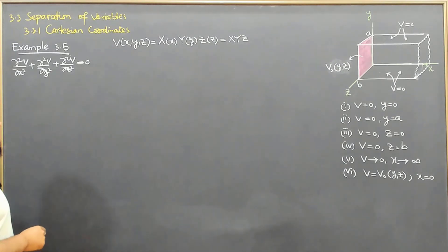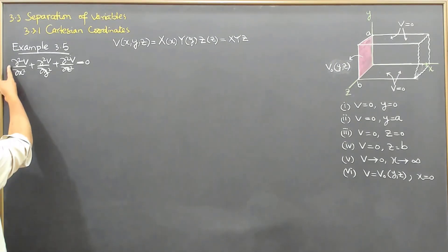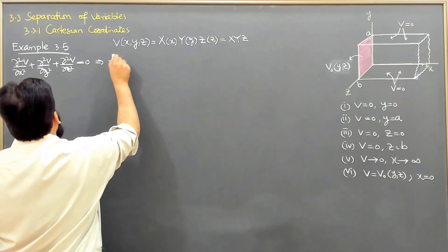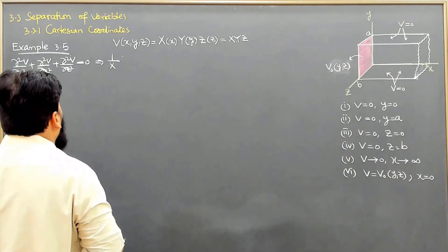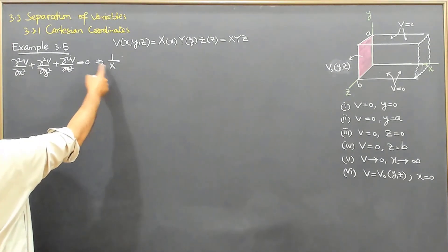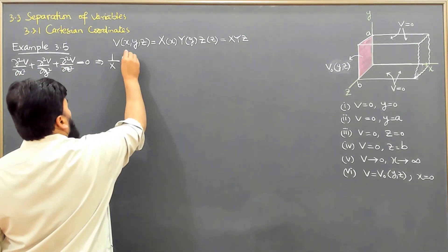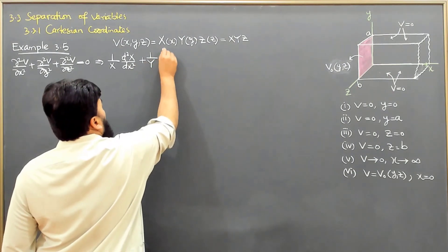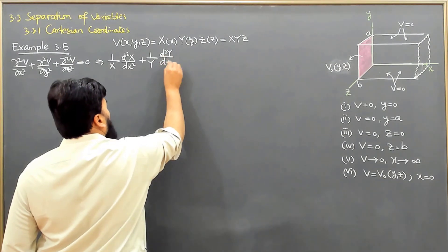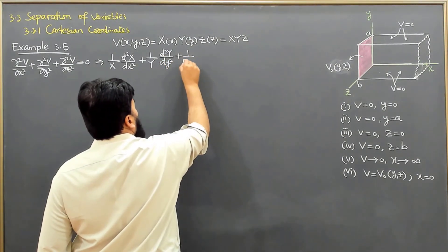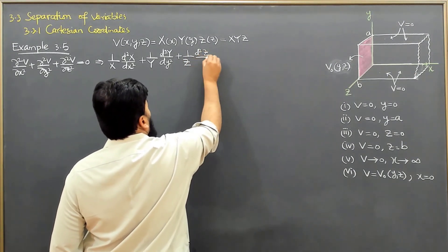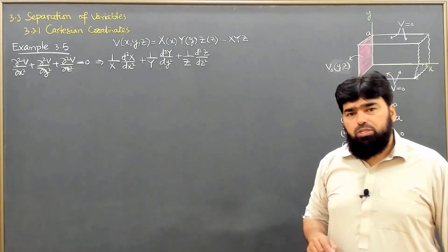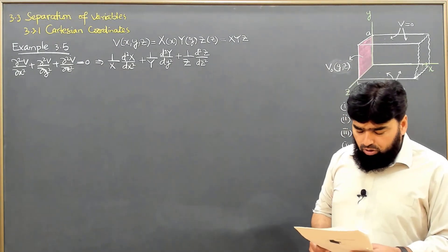Dividing the whole equation by X·Y·Z, the Y and Z factors cancel in the first term, leaving (1/X)(d²X/dx²). Similarly we get (1/Y)(d²Y/dy²) plus (1/Z)(d²Z/dz²) equals zero. Note that capital X, Y, Z here are not variables — they are functions representing separate potentials.